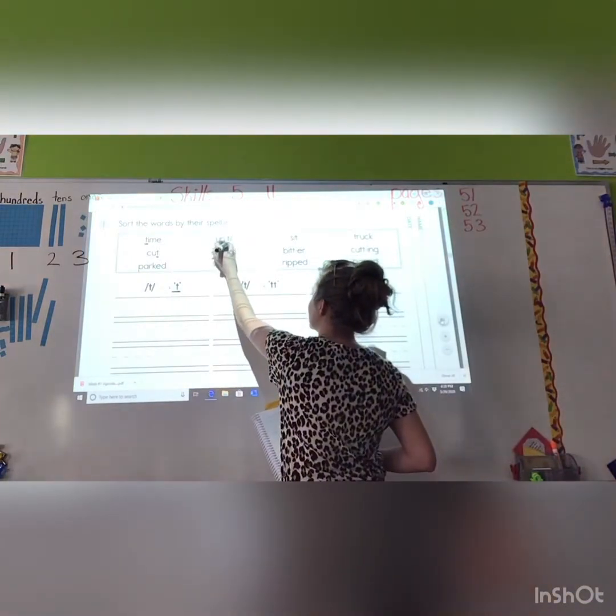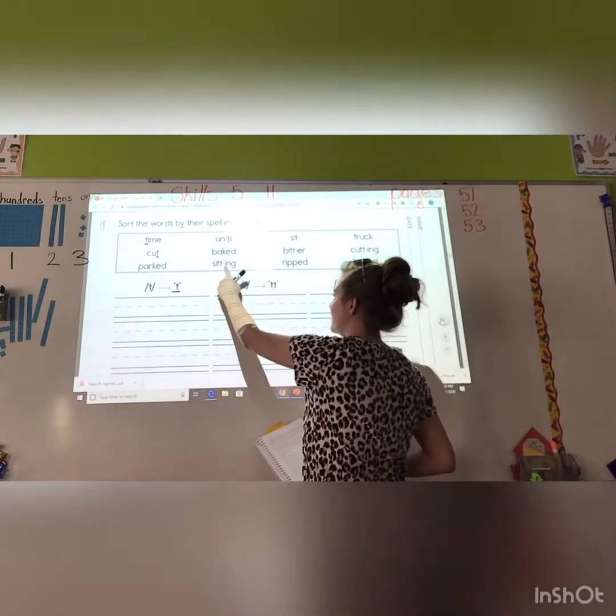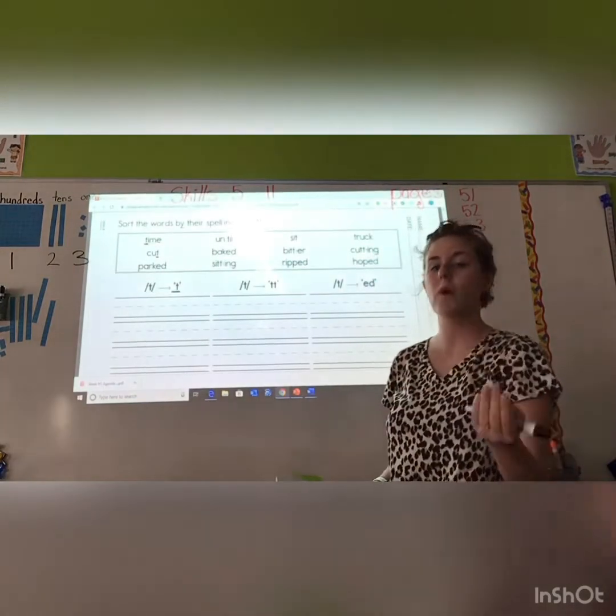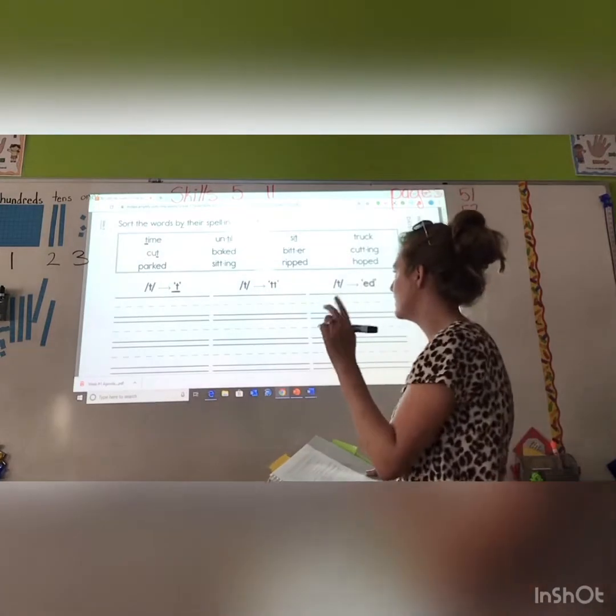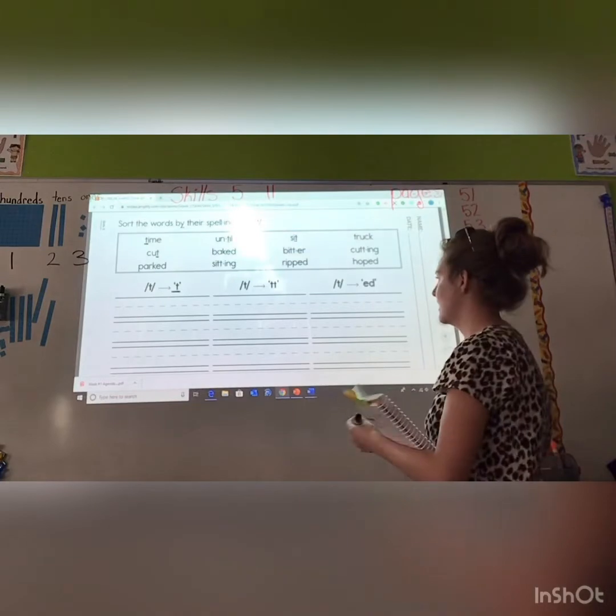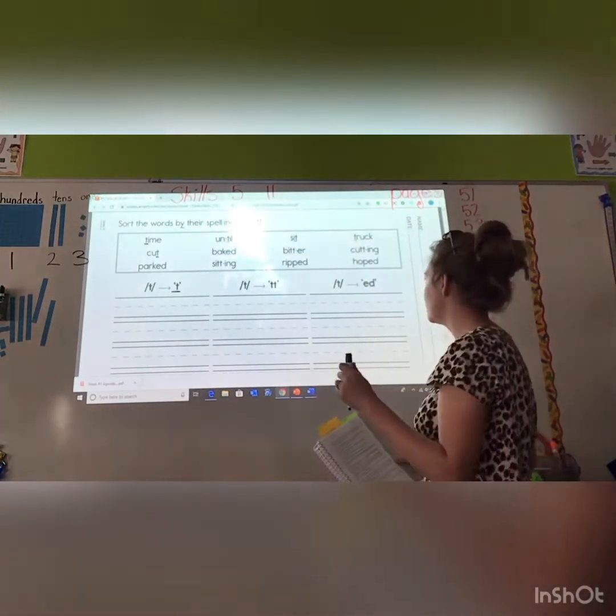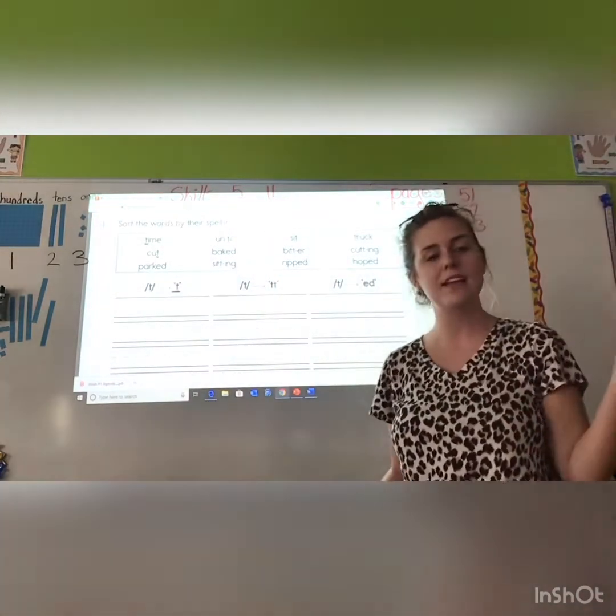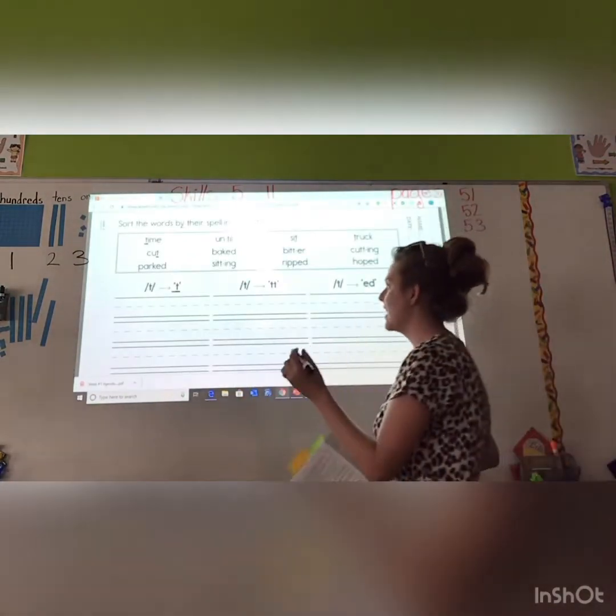All of the one T's. Time has one T. Cut has one T at the end. Part. Oh, no. That doesn't have a T, so we're going to skip it. Until. Ooh, there's that T in the middle. Baked. Skip that. We don't have that yet. Sitting. I see one T, but I see two actually. So, we're going to wait. Sit has one T. Bitter has two T's. So, we're going to skip.